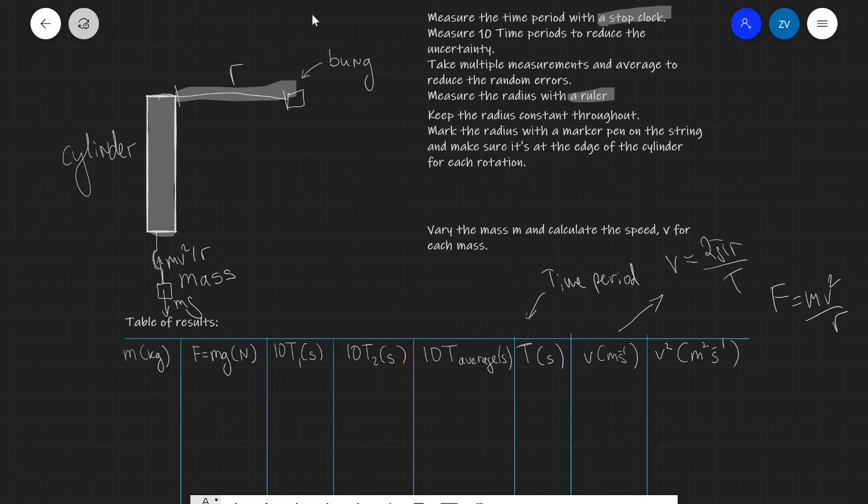So after we do this for one mass what we're going to do is add more mass down here and after we've added more mass we're going to repeat this and find the speed for each mass. I'm going to be increasing from about 100 grams to maybe about 500 or 600 maybe even 700 grams and see the effect on v squared.